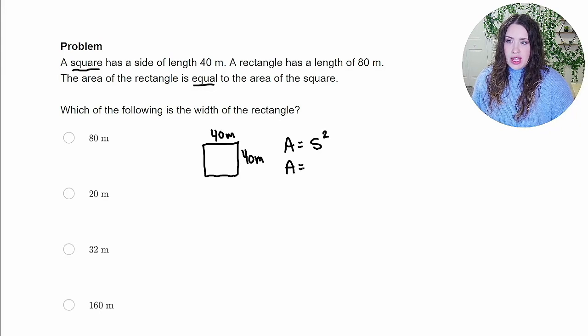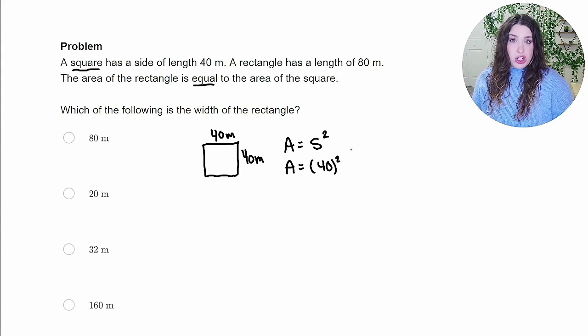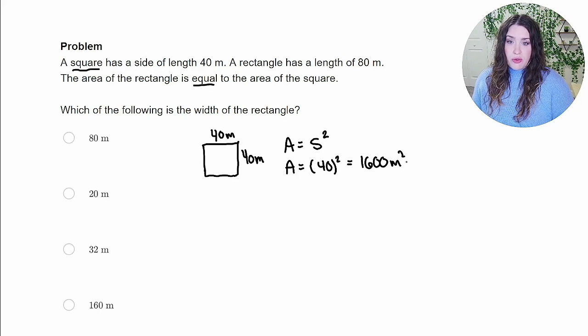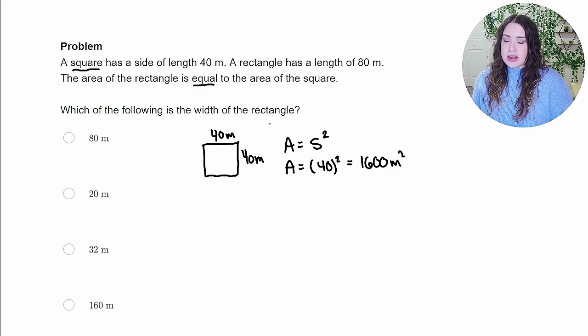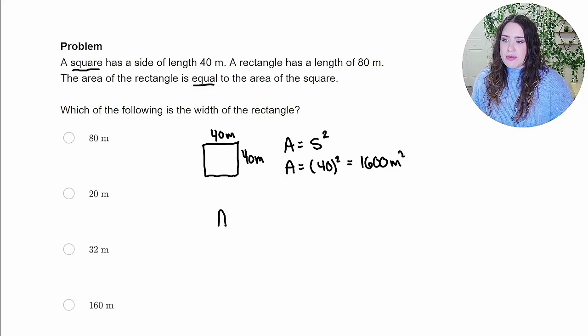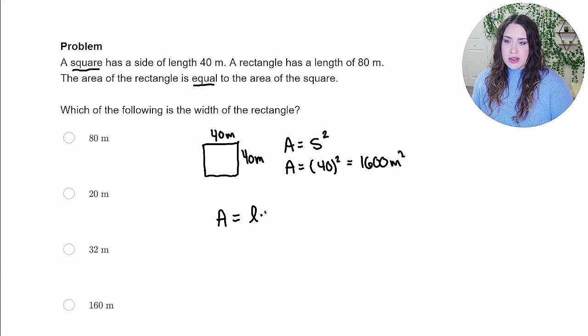And so we can find the area of the square by simply taking that side length and squaring it. So the area is going to be 40 squared, which is 40 times 40. Using a calculator, we can get that that is 1,600 meters squared for that square. Now, because the area of the rectangle is equal to the area of the square, we can use that formula, which for a rectangle is going to be the length times the width.